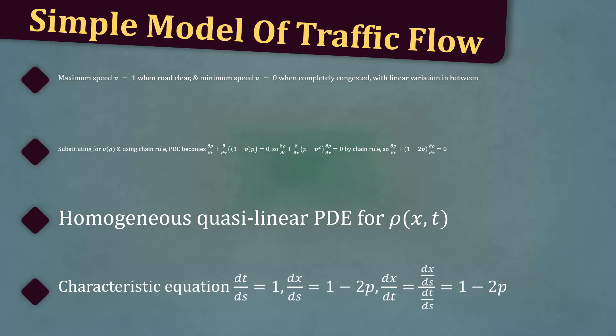The characteristic equations are dt/ds = 1, dx/ds = 1 - 2ρ, and dx/dt = (dx/ds)/(dt/ds) = 1 - 2ρ.